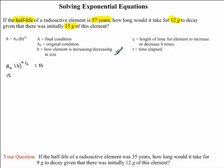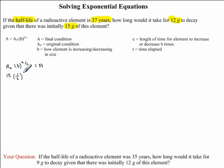Next we have b — how the element is increasing or decreasing in size. Since we're dealing with half-life, the element is being halved, so for b we put in 1/2. T represents the time elapsed, and this is what we want to solve for, so we leave t as a variable. C is the length of time for the element to decrease b times — in our case, 37 years — so we substitute 37 for c.